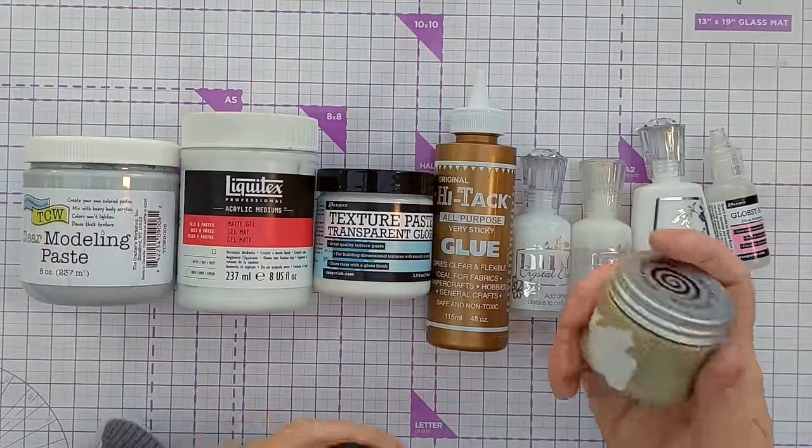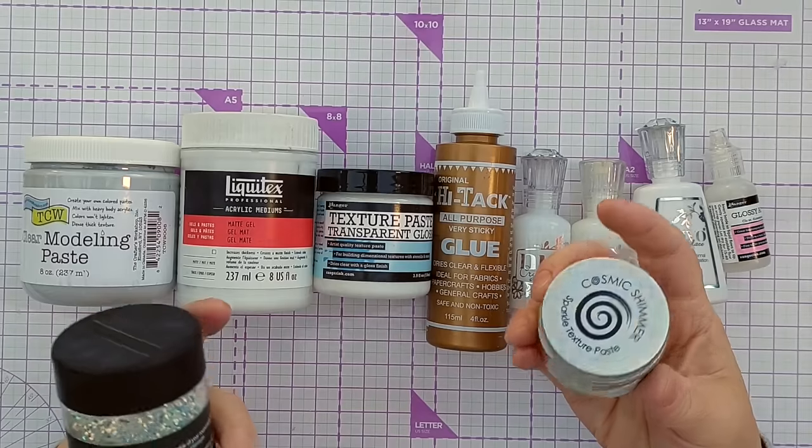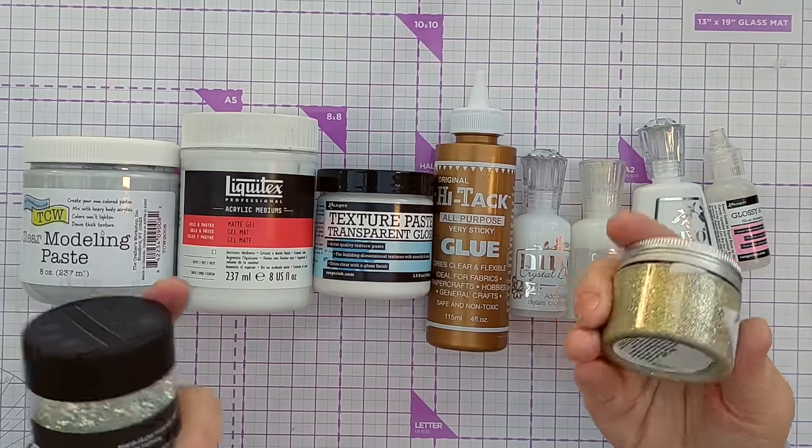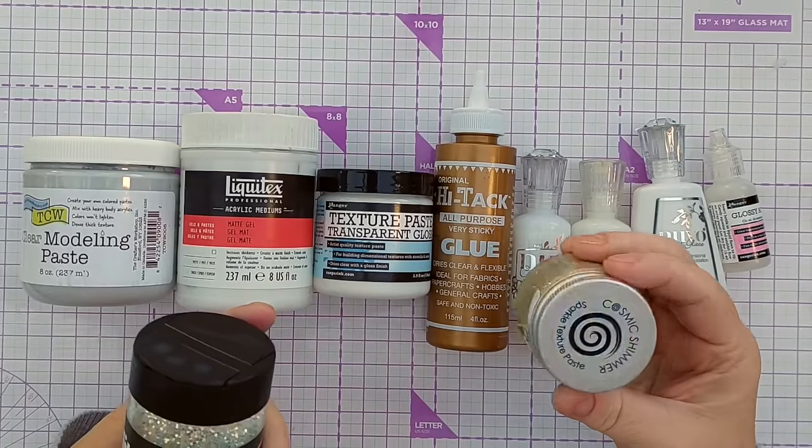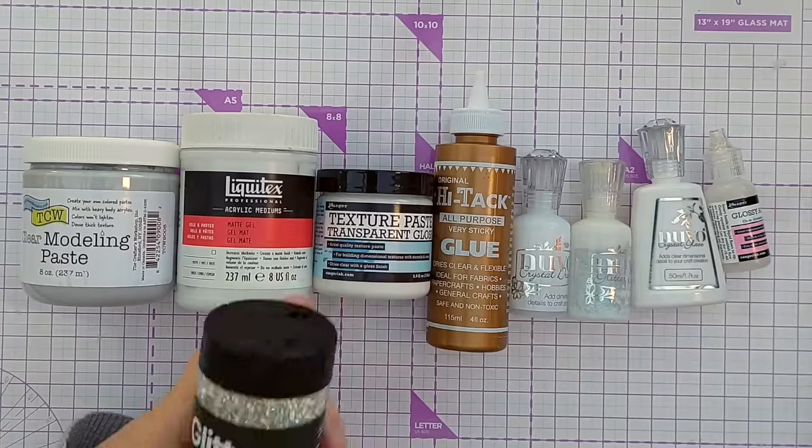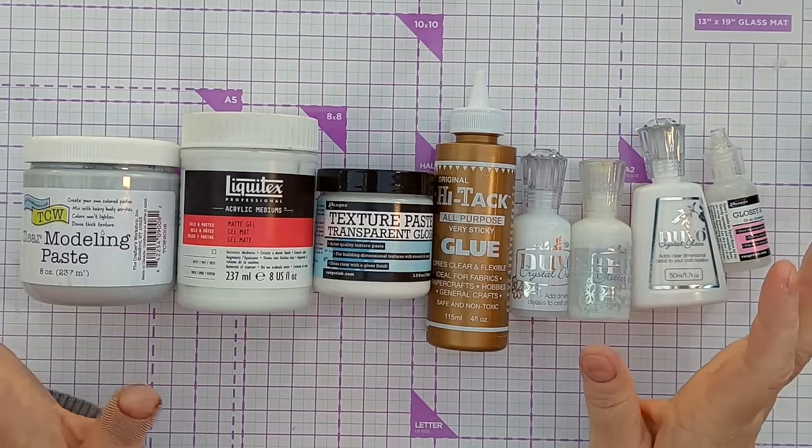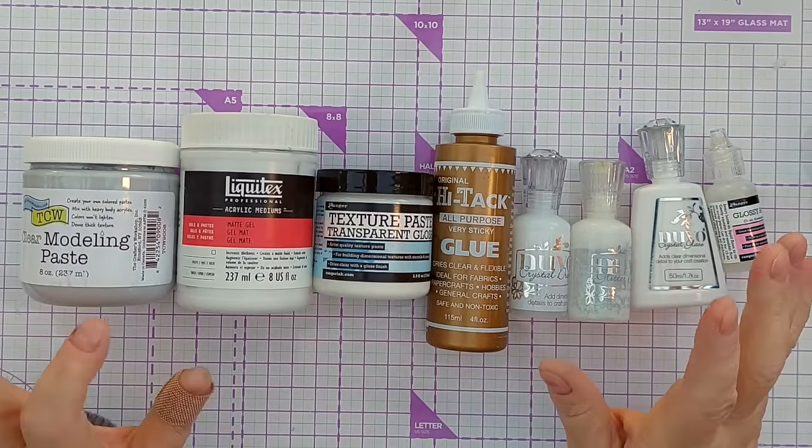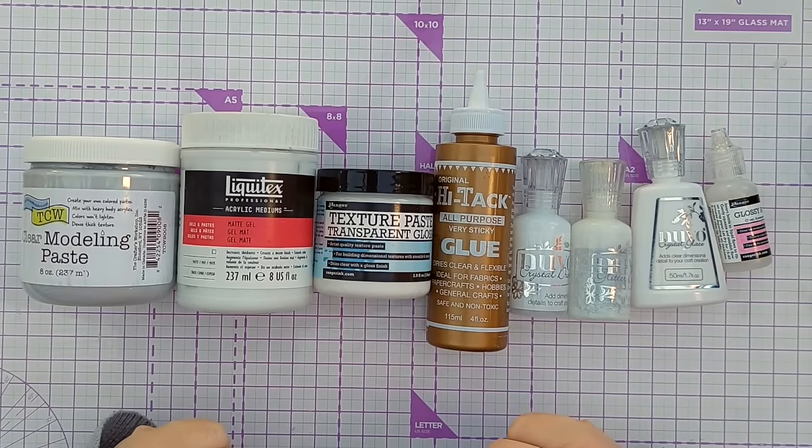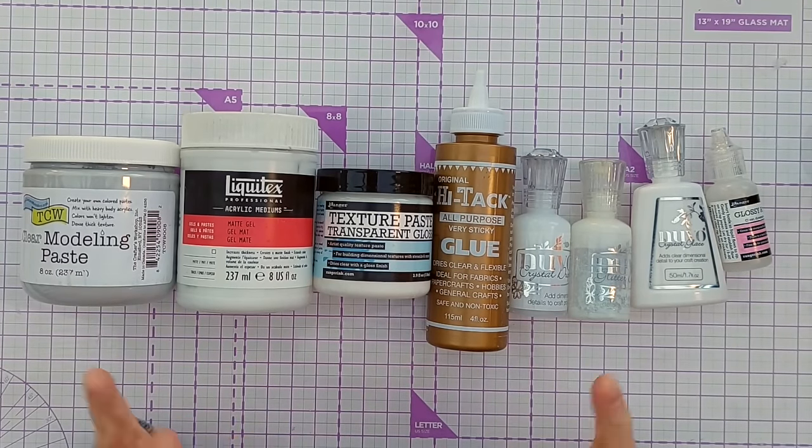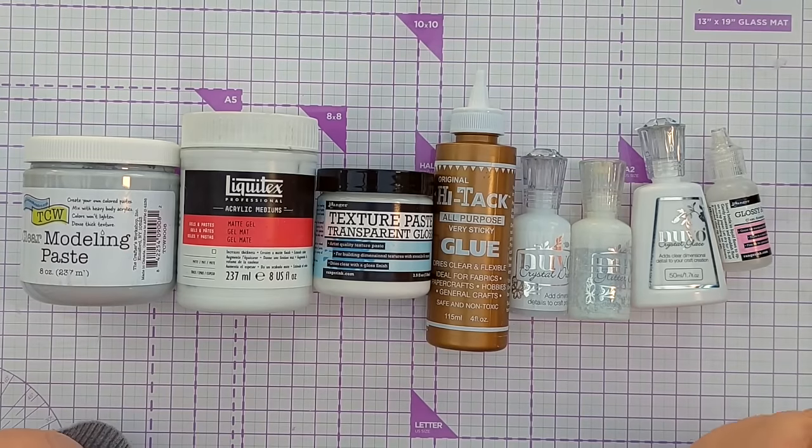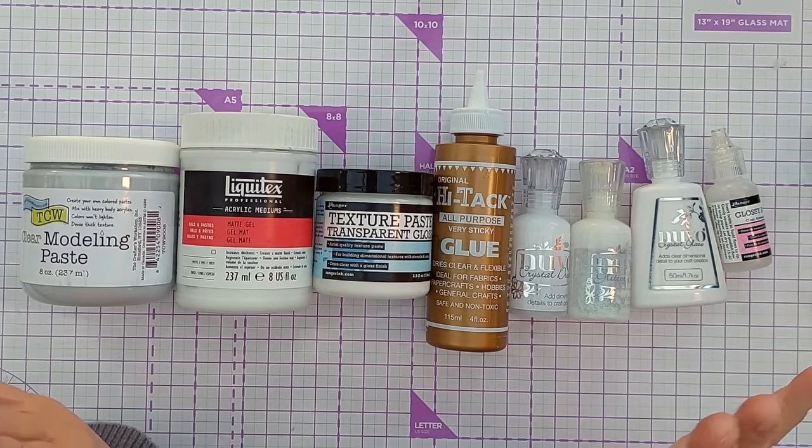What you need to make your own glitter texture paste or glitter glue is glitter, obviously—you've probably got lots of different colors of glitter to experiment with—and you need a gluey medium that will dry clear. These are the ones I've tested.